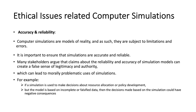The next ethical issue is accuracy and reliability. Computer simulations are used to model real-world examples, and as such they are subject to limitations and errors. It is important to ensure that simulations are accurate and reliable. Many stakeholders argue that overstated claims about the reliability and accuracy of simulation models can create a false sense of legitimacy and authority, which can lead to morally problematic uses of simulation. For example, if a simulation is used to make decisions about resource allocation or policy development but the model is based on incomplete or falsified data, the resulting decisions could have negative consequences.